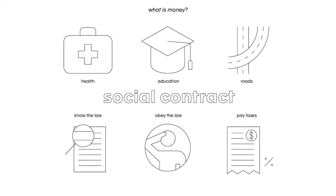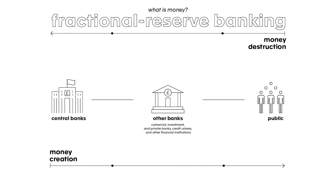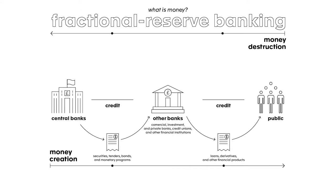In this fractional reserve banking system, central banks create the initial money supply and lend it to other banks, which in turn lend and expand that money supply to the wider public — the intra-monetary agents — like private individuals, companies, and state departments. All of these loans are expected to be repaid with interest, but because the money to pay the interest is never created to start with, this creates a debt that is impossible to redeem.